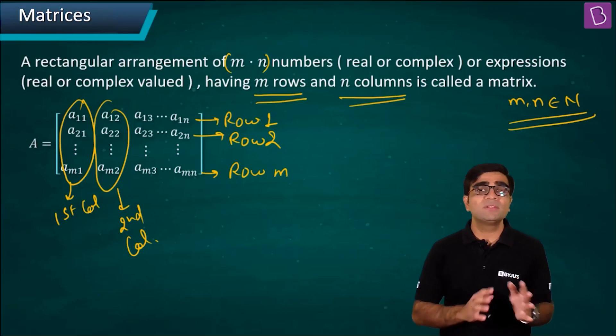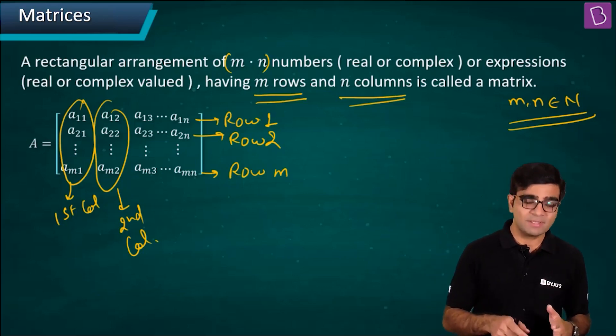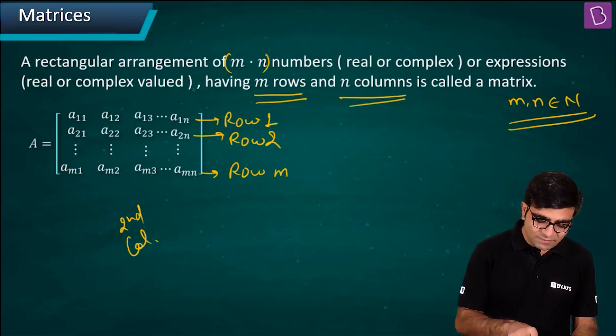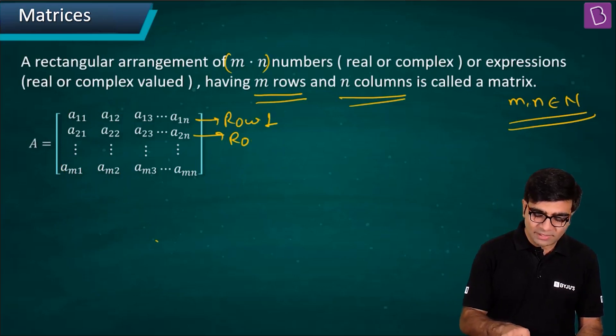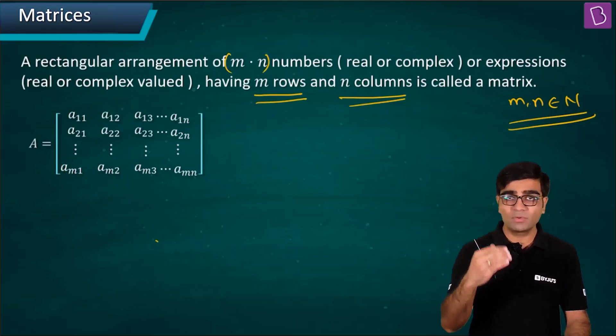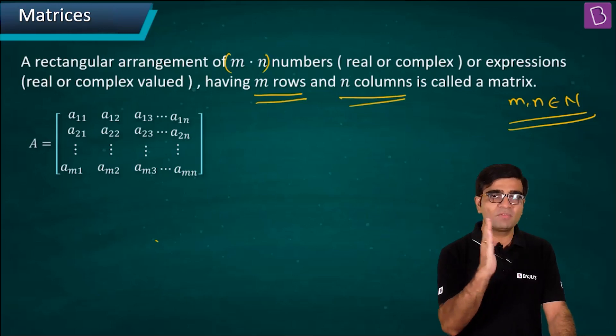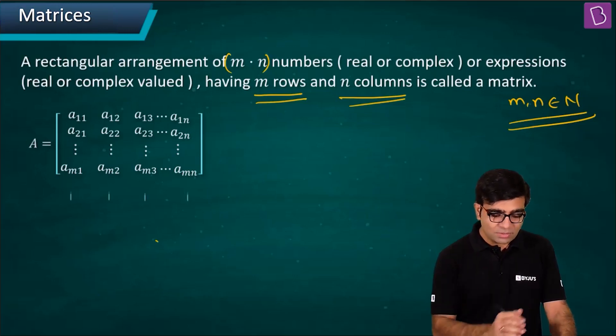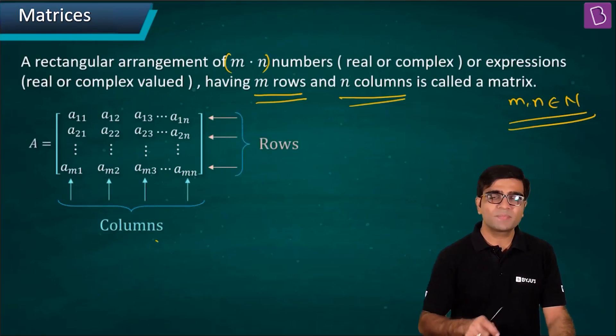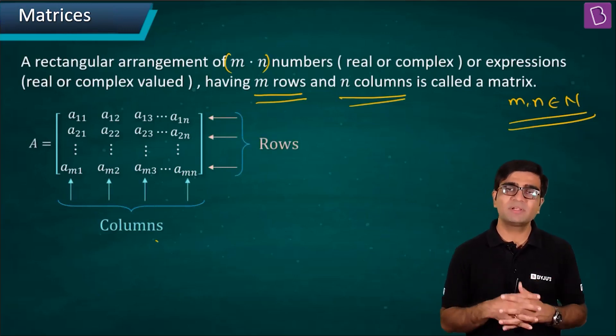It's a two-dimensional representation of data set. We have m number of rows, n number of columns. These will be my columns and these will be my rows. That's why it becomes a two-dimensional representation of the data set.